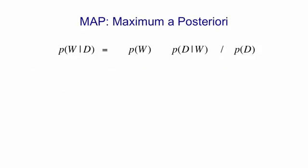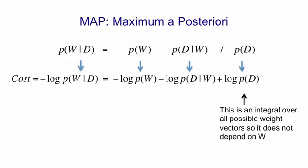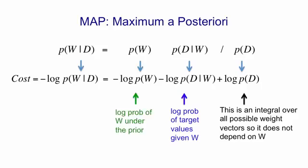In maximum a posteriori learning, we're trying to find the set of weights that optimizes the trade-off between fitting our prior and fitting the data. That's Bayes' theorem. If we take negative logs to get a cost, we get that the negative log of the probability of the weights given the data is the negative log of the prior term plus the negative log of the data term, plus an extra term. That last extra term is an integral over all possible weight vectors and so doesn't affect W, so we can ignore it when optimizing W. The term that depends on the data is the negative log probability of the target values given W — that's our normal error term. And the term that depends only on W is the negative log probability of W under its prior.